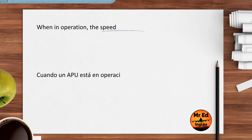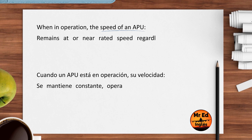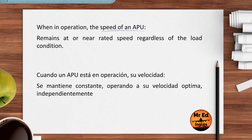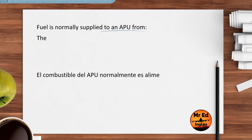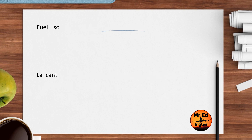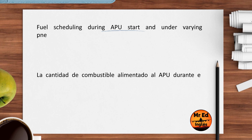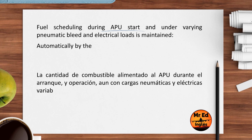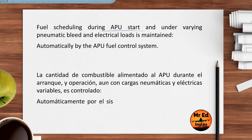When in operation, the speed of an APU remains at or near rated speed, regardless of the load condition. Fuel is normally supplied to an APU from the airplane's main fuel tank. Fuel scheduling during APU start and under varying pneumatic bleed and electrical loads is maintained automatically by the APU fuel control system.